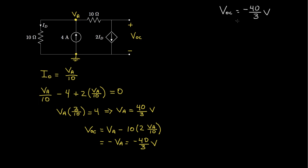The open circuit voltage is the Thevenin voltage, so we still need to solve for the Thevenin resistance, and there are two ways to do that. One way is to short these terminals, solve for the short circuit current, and then the Thevenin resistance is the open circuit voltage divided by the short circuit current. Another way is to set all of the independent sources to zero and determine the equivalent resistance. Let me show you both of those ways.